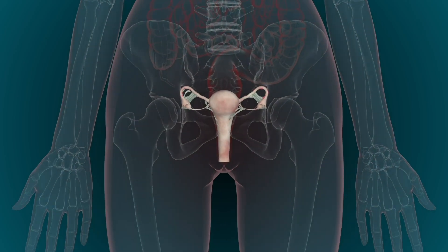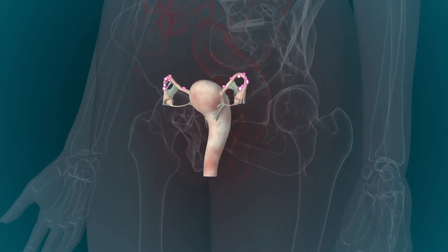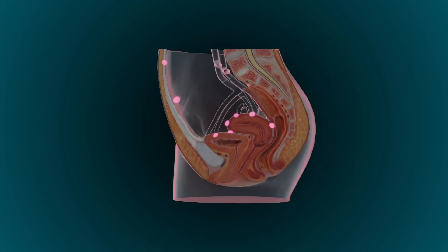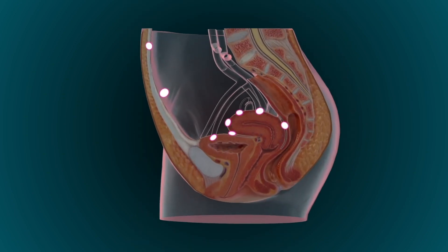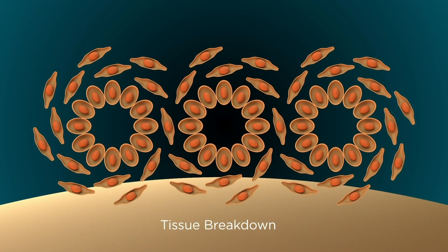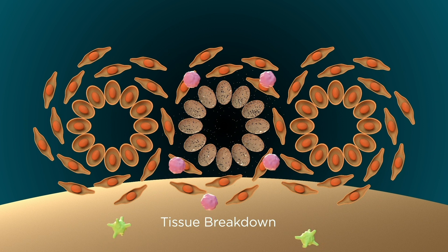Endometriosis tissue grows in response to oestrogen in the proliferative phase of the menstrual cycle and stabilises in the progestogenic luteal phase. During the menstrual phase, when progesterone is withdrawn, endometriotic tissues break down.